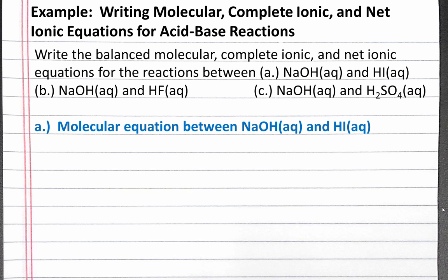First we'll write the molecular equation between sodium hydroxide and hydroiodic acid. This is a reaction between a strong base and a strong acid. Sodium hydroxide reacts with hydroiodic acid to produce water and the salt sodium iodide. This equation is already balanced with just ones for coefficients.